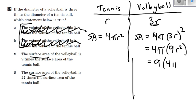I can clearly see that here's the tennis ball surface area, and then multiply it by 9. So the volleyball is 9 times the surface area of the tennis ball. And that's what C says, that the surface area is 9 times the tennis ball. So the answer is C.